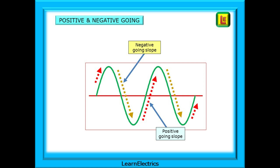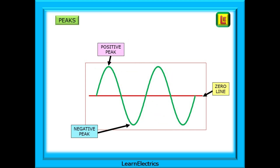it changes direction and now starts to move in a positive direction all the way back up to the top of the waveform. Then it changes to negative-going again, then positive-going, and so on. We call the top and bottom of each waveform the peaks. We have a positive peak and a negative peak to each full cycle. The midpoint line is also labelled on this drawing, which for us is the zero volts line. The voltage is peaking 50 times per second in the positive sense and 50 times per second in the negative sense.